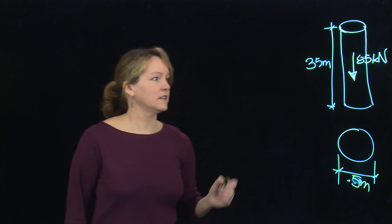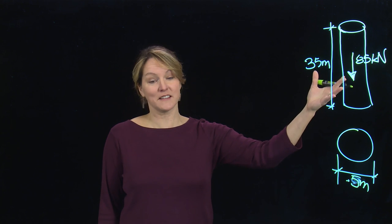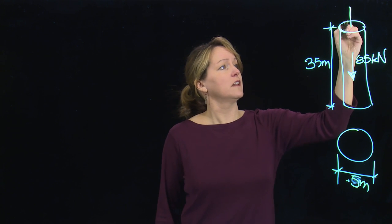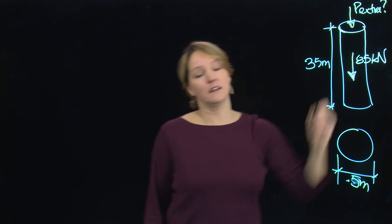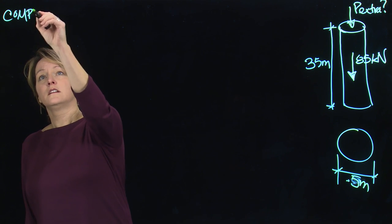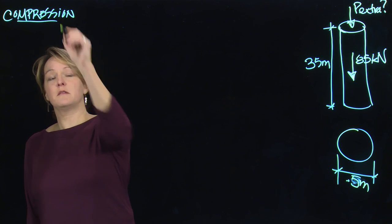I want to see how much, hopefully the tree is fine for just its self-weight. But we want to see how much extra load he can put on for his library. So what is the extra load that it can handle? I'm going to start out with compression. I want to see if it's OK for compression and how much extra capacity I might have.